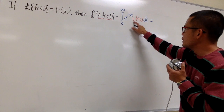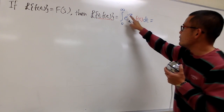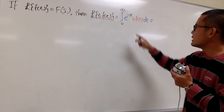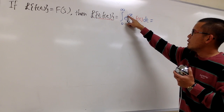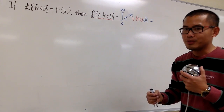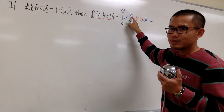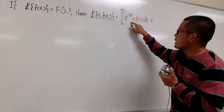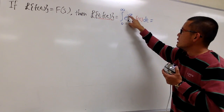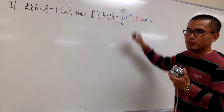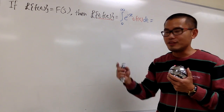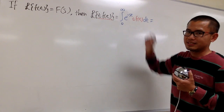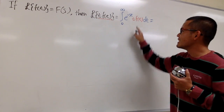How can we squeeze out this t? Well, think about the derivative of negative st. Depending on whether you differentiate with respect to s or t, you get different results. If you differentiate negative st with respect to t, you get negative s. But if you differentiate with respect to s, you get negative t. And that's how we can squeeze out this t.